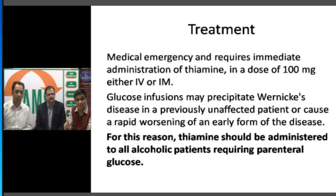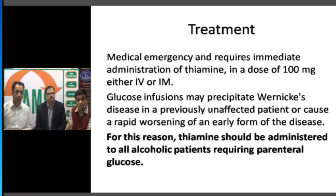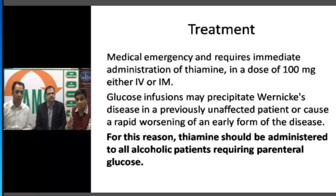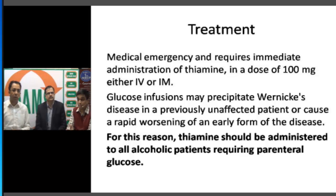Thiamine is an important co-factor for enzymes required for intracellular glucose metabolism, such as alpha-ketoglutarate dehydrogenase and pyruvate dehydrogenase. Due to thiamine deficiency, glucose cannot be utilized, and excess glucose causes mitochondrial damage intracellularly. The most important treatment is to replace thiamine — approximately 100 mg per day intravenously until the patient starts eating, then supplement orally. Critically, glucose infusion must not be given before thiamine, as it may precipitate or worsen Wernicke's encephalopathy by causing further mitochondrial damage.